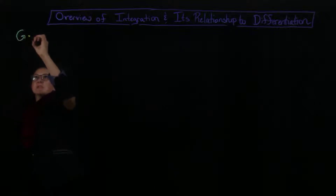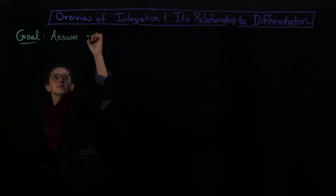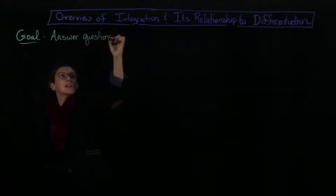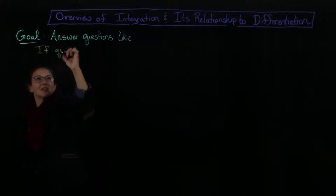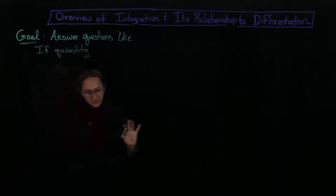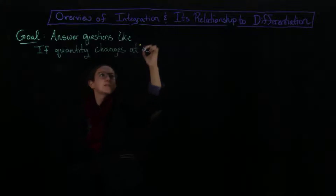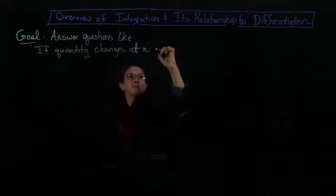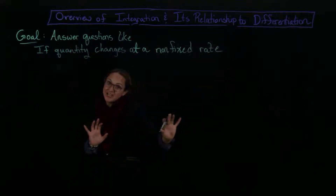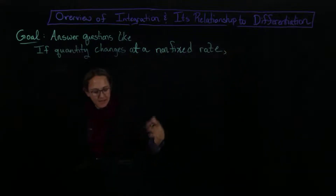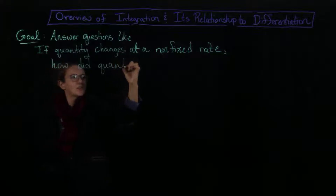So what is the goal with integration? The goal is going to be to answer questions like: if a quantity changes at a non-fixed rate, how did the quantity increase over that particular period of time? So we have a quantity that's changing at some kind of rate, but it's not actually fixed, and then the question is how did the quantity increase over that period of time?